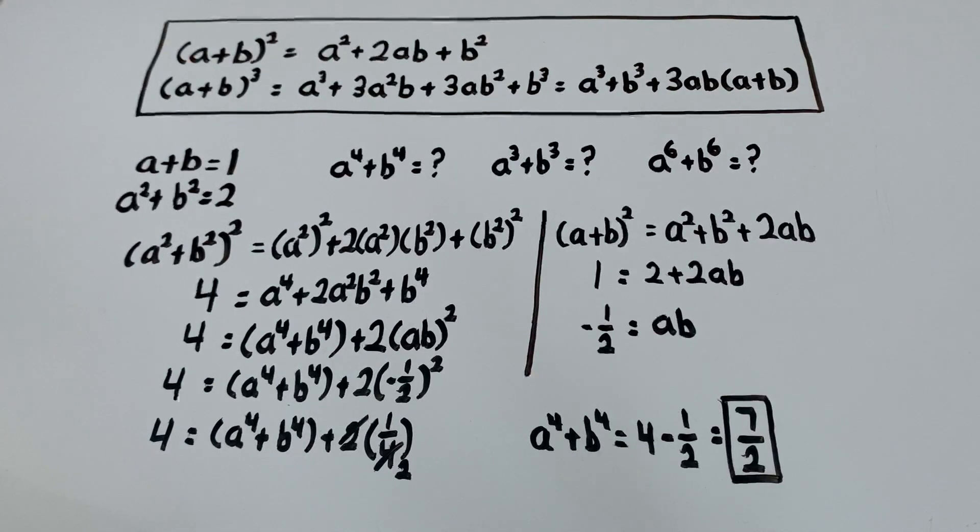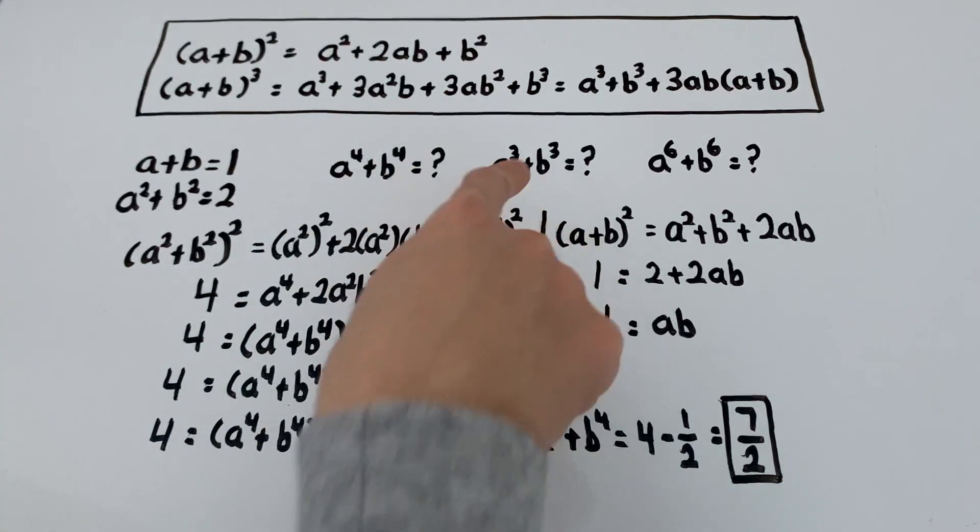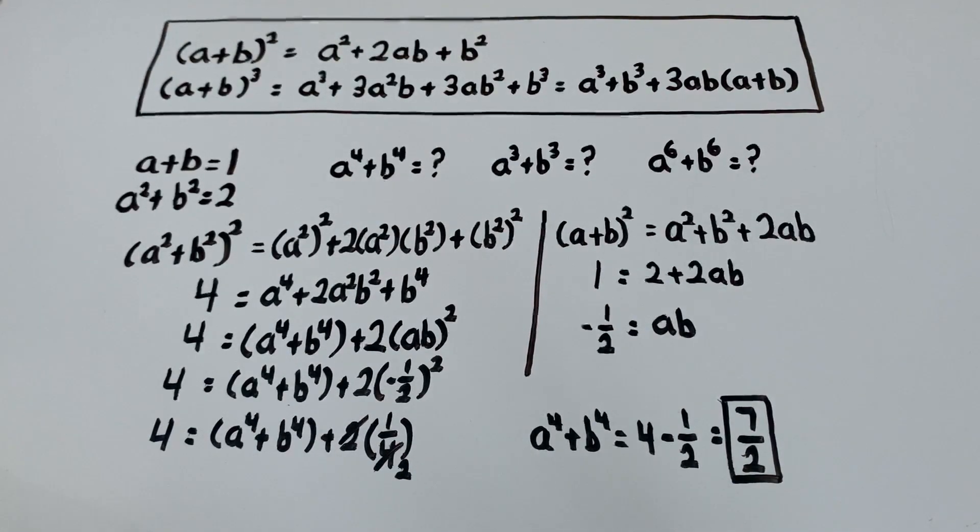And notice how in this problem, we were able to get what we wanted without actually finding the value of a or b. Because guess what? We don't need to. All we want is a to the 4th plus b to the 4th. We don't actually need the values of either a or b. So that's pretty neat. Now that concludes part 1, a to the 4th plus b to the 4th. We're going to move on to a cubed plus b cubed, which is slightly trickier, but is still solvable. And I'm going to show two solutions in the next video. So let's check it out.